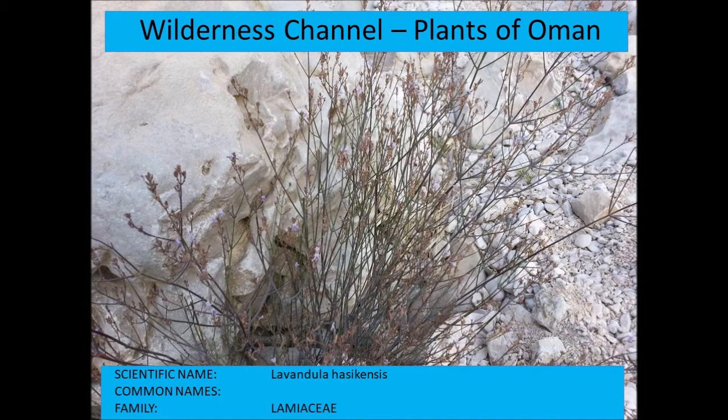Lavandula subnuda is a lavender species that occurs specifically in the Dhofar region. As the name suggests, it was found near Hasik, close to the town of Hasik, and has quite a narrow range.